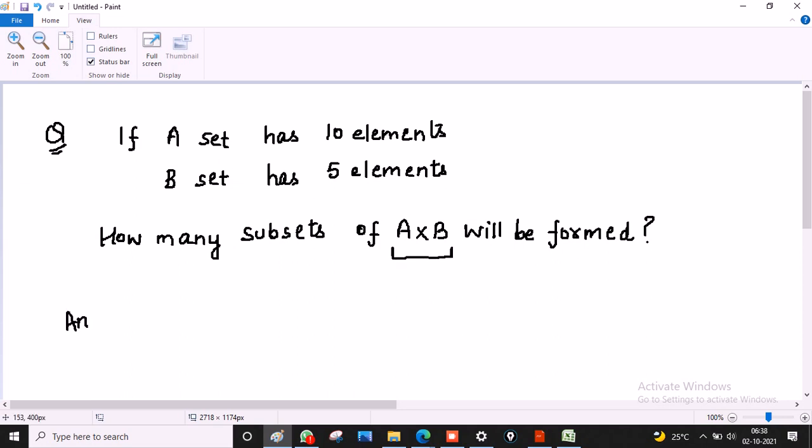We will start our answer with number of elements in A is 10, number of elements in set B is 5. Therefore, number of elements in A cross B will be how many?